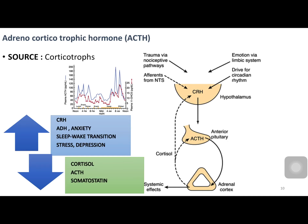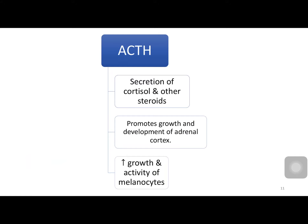Other factors which increase ACTH release are corticotrophin releasing hormone from the hypothalamus, ADH, anxiety, sleep-wake transition, stress, and depression. ACTH secretion is reduced by negative feedback control from cortisol released from adrenal cortical glucocorticoids, by ACTH itself, and by somatostatin. The important roles of ACTH are increasing secretion of cortisol and other steroids from the adrenal cortex, promoting growth and development of the adrenal cortex, and promoting the growth and activity of melanocytes.